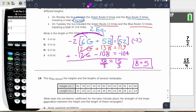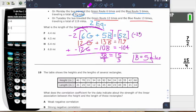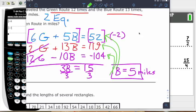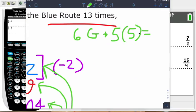That's the number of blue, or that's 5 miles for the blue. But that wasn't what they were asking. The original question was asking for the green route. So if I take this B equals 5, I can plug it back into any of the equations. Typically I do the one that has the smallest number. So I do like the 6G plus 5B equals 52. I'm going to zoom out so I can see it. So 6G and then plus 5 times B, but instead of B, I'm going to plug in 5, and then equals 52.